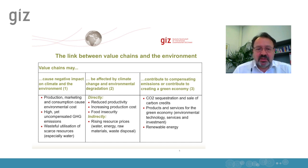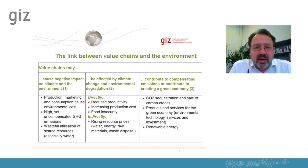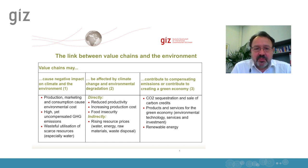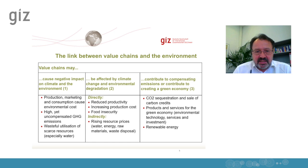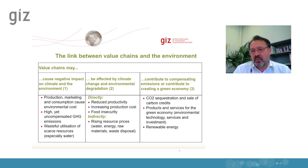The third correlation is a positive one. The value chain may contribute to compensating emissions and creating a green economy. For instance, a promotion of renewable energy value chains such as solar energy, or the promotion of environmentally friendly technologies, would lead to reduced emissions and more sustainable use of energy. For assessing the correlation between value chains and the environment, we find it useful to look at these three basic correlations, and this is our starting point for any kind of environmental assessment.